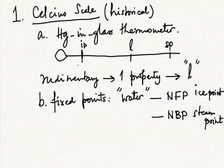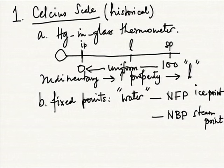He decided that the ice point would be labeled 0, the steam point labeled 100, and in between he had a uniform scaling. To measure the temperature of another system, place the Celsius thermometer in thermal contact with it — put it inside so that there is direct thermal contact, asserting that the boundary between your thermometer and the system is a diathermic boundary, as studied in the zeroth law.